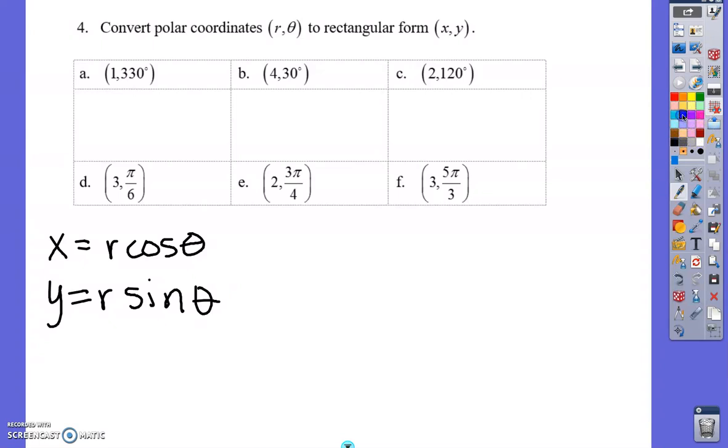With a calculator that is in degree mode for A through C, I'm going to do this calculation: 1 times the cosine of 330 degrees, and y will be 1 times the sine of 330 degrees. And I will grab my calculator to do those calculations.